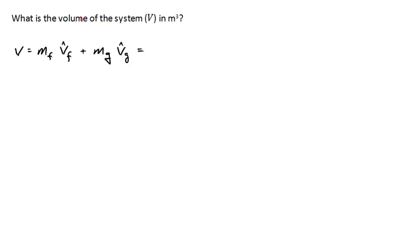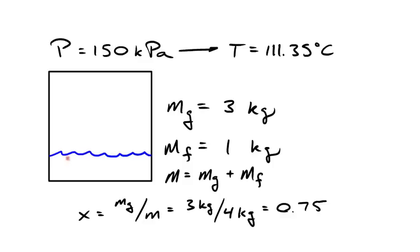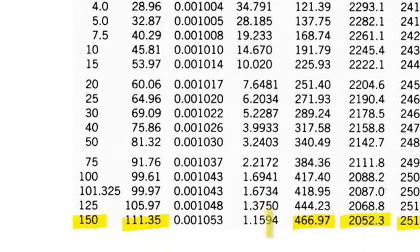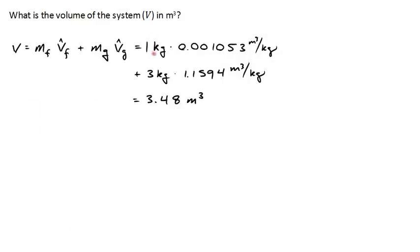The last part asks for the actual volume of the system in cubic meters. One approach is: V = m_f·v_f + m_g·v_g — calculating the volume of the liquid and adding it to the volume of the vapor. Using specific volumes from the table at 150 kPa, with one kilogram of liquid and three kilograms of vapor, the total volume comes out to 3.48 cubic meters.